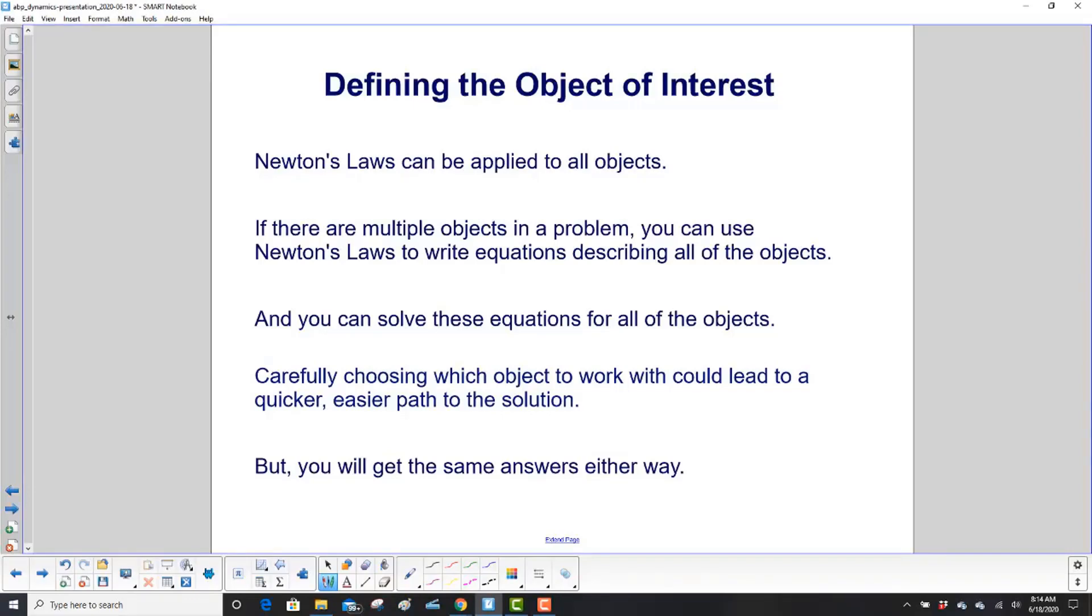What's critical is define what you're looking for and you have to define your object of interest. Newton's laws can be applied to all objects. If you have multiple objects in a problem, you can use Newton's laws to write equations for all of them and solve these equations for all of the objects. Carefully choosing which object to work with could lead to a quicker, easier path to the solution, but you'll get the same answers either way.